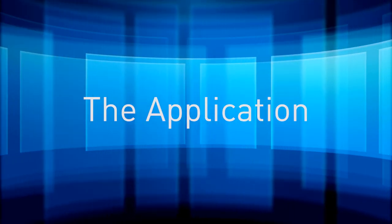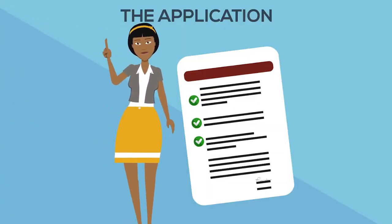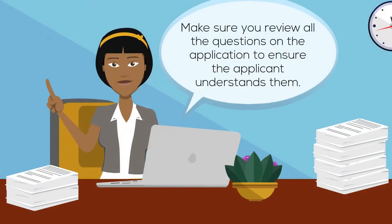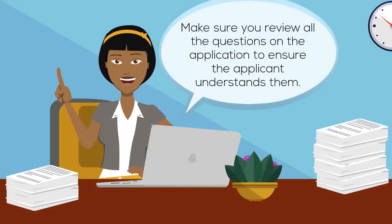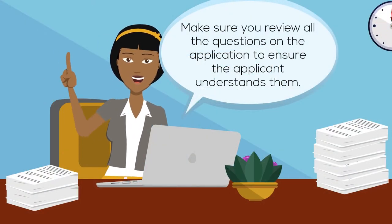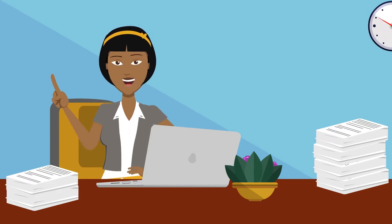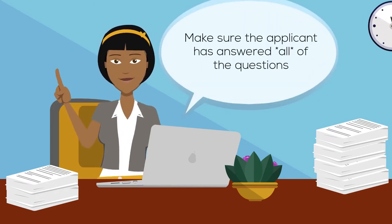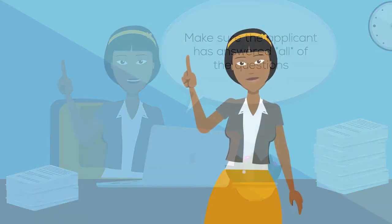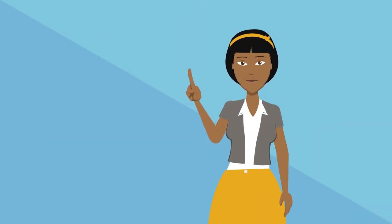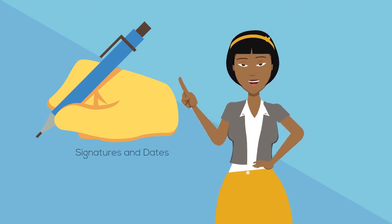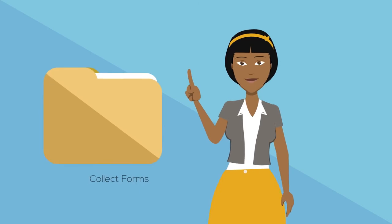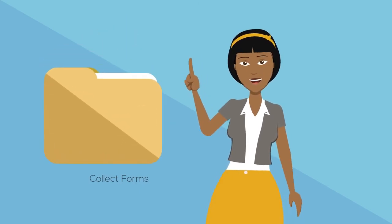The Application. HUD says having a comprehensive application is important because it guides the questioning. Make sure you review all the questions on the application to ensure the applicant understands them, and make sure all applicants have answered all of the questions — nothing should be left blank. Also, take care of any technical requirements like getting required signatures and ensuring all forms are dated. You should also collect any needed forms that the applicant brings to the interview.